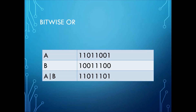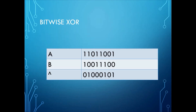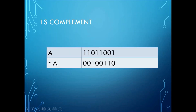Bitwise OR returns 1 if any one or both the digits in the input are 1. It returns 0 only when both the digits are 0. So in this example, wherever in the input both the digits or any one digit is 1, it returns 1; it returns 0 where both the digits are 0.